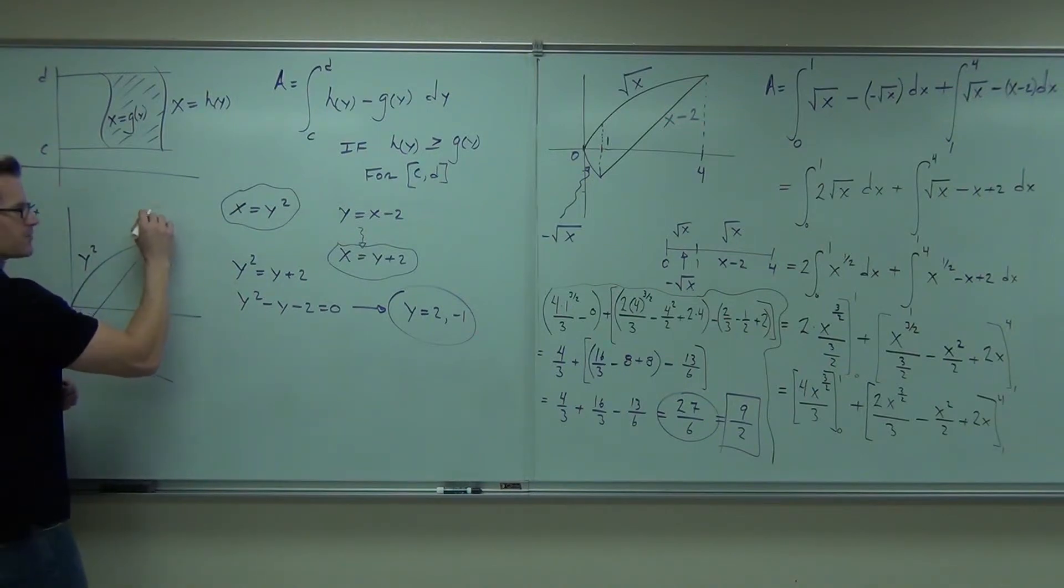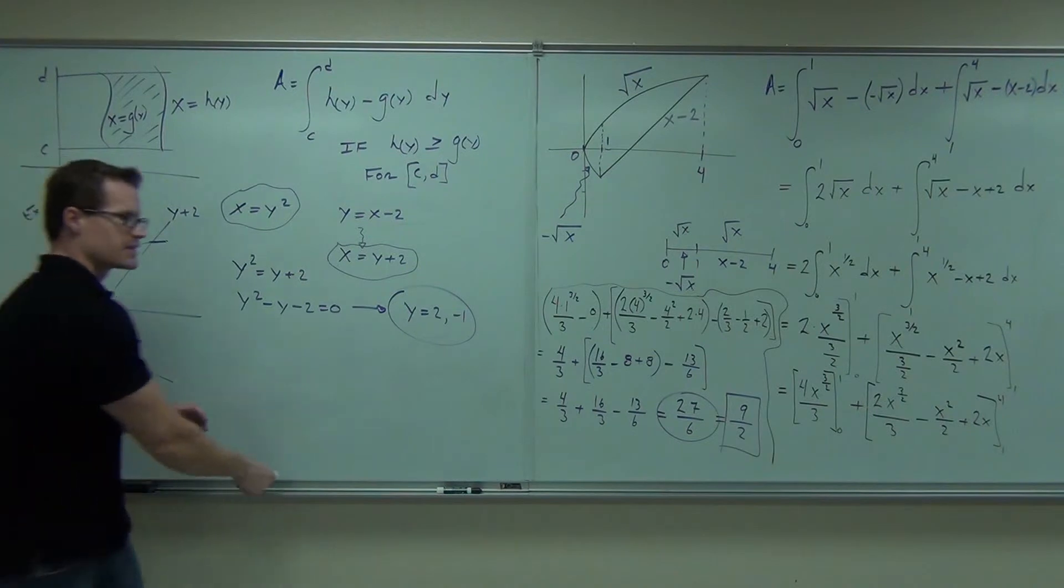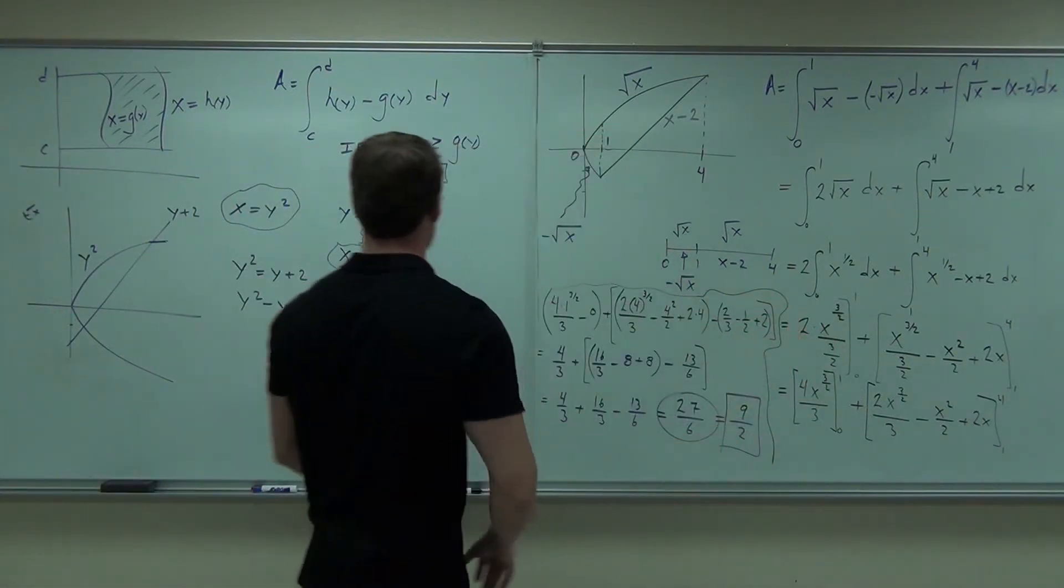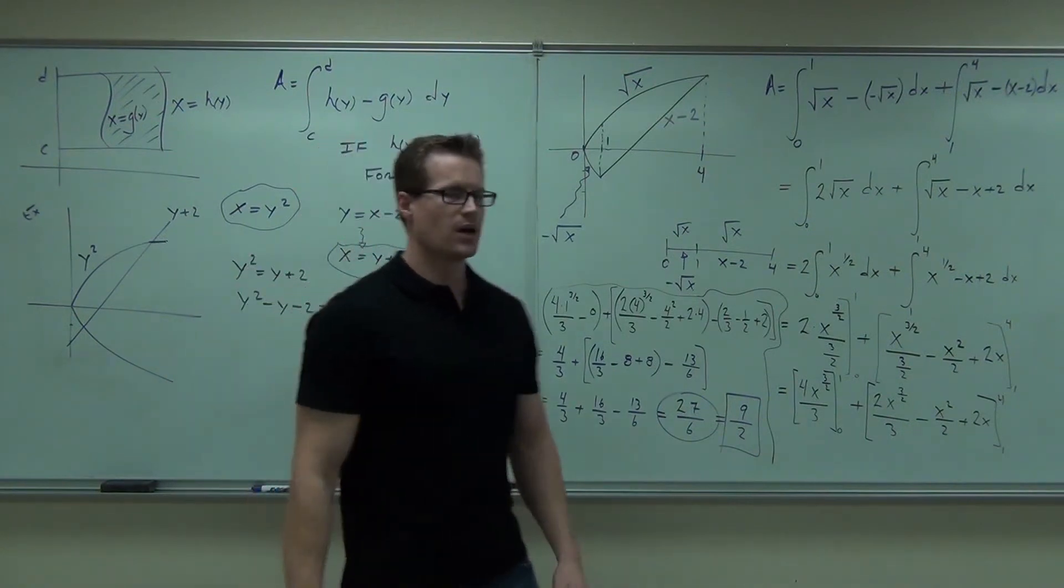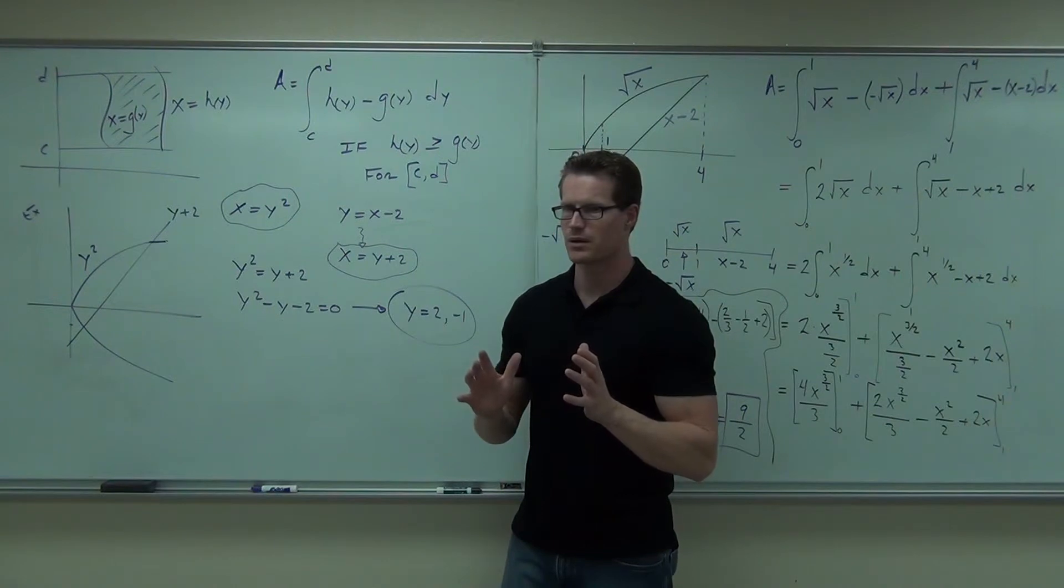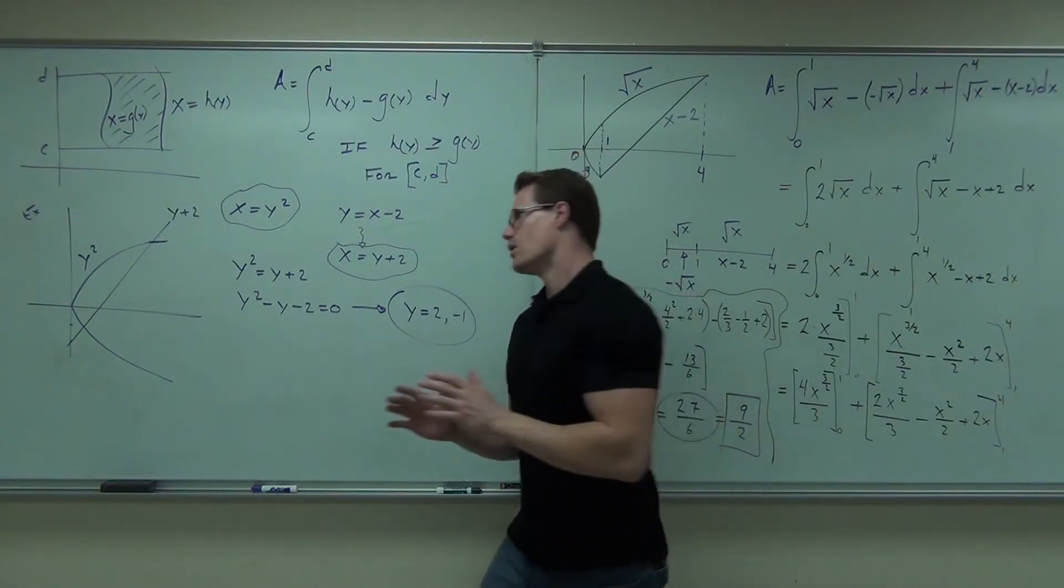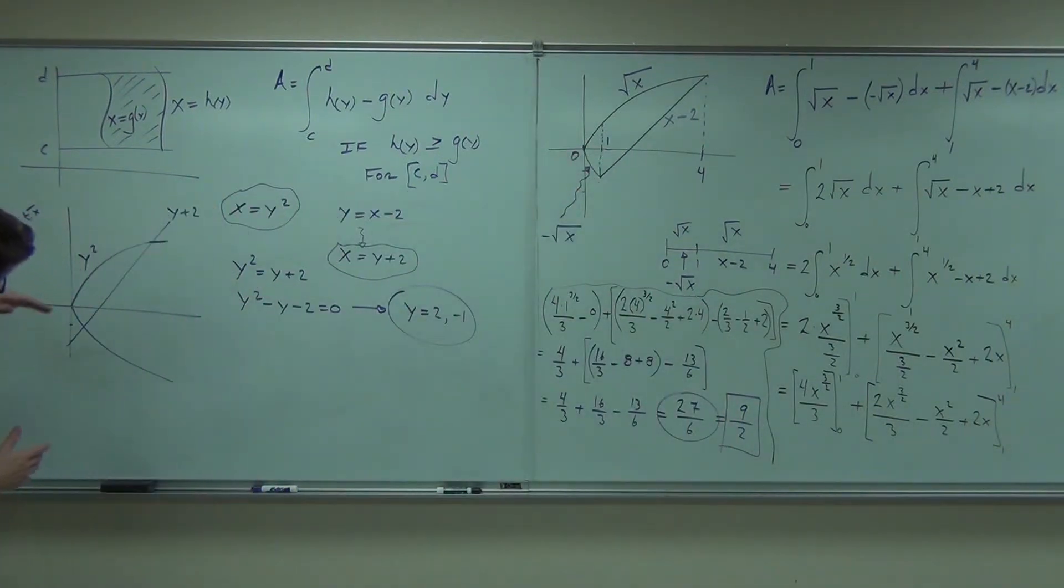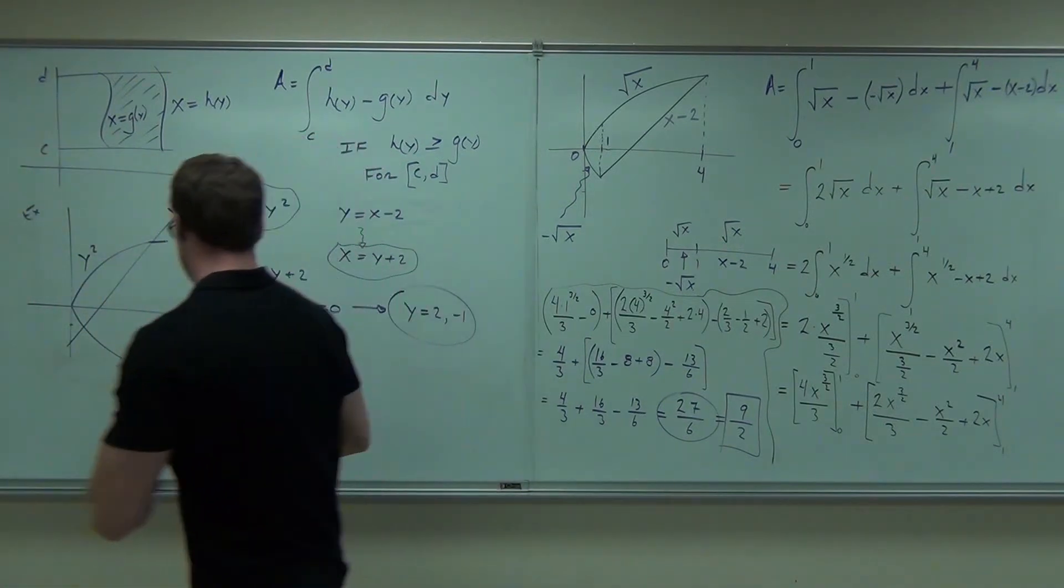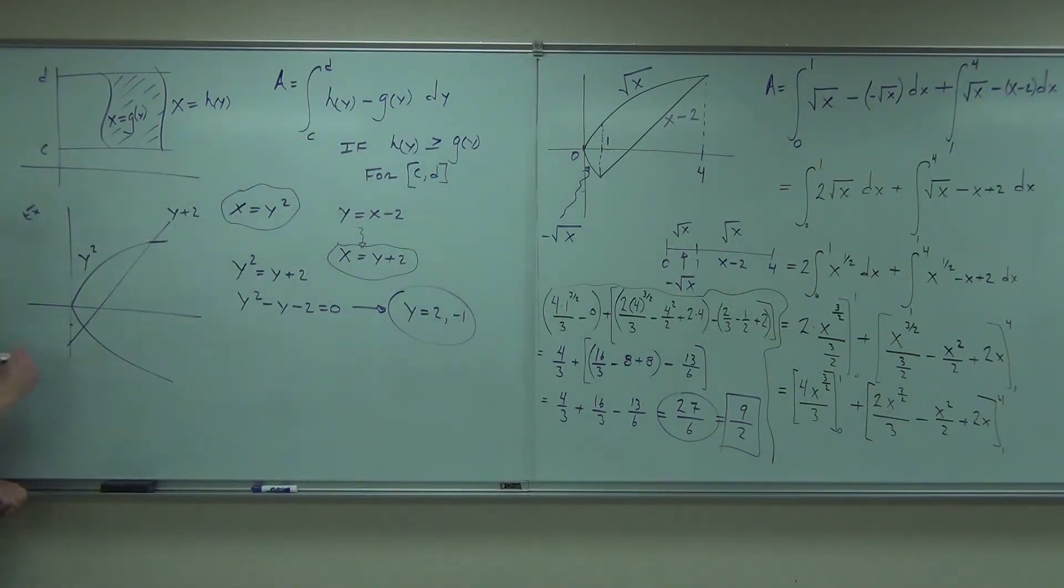Now that we have these functions in y, we have y squared here. We have y plus 2 here. Is there one function that's completely, not on top of, but to the right of? If you turn your head like this, it will be on top of. And we have one function that's on the top or on the right of another function. Okay. Now, from this way, where does it start? Where's my integral start? It goes from bottom to top.